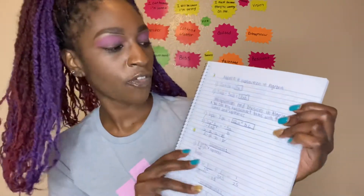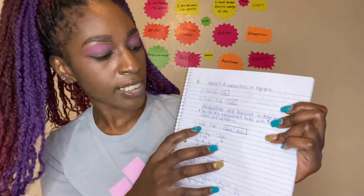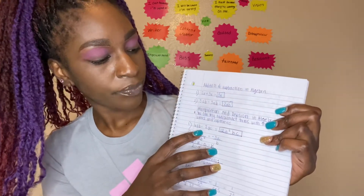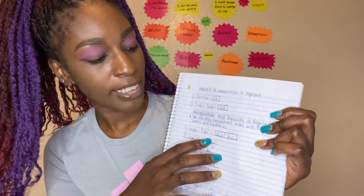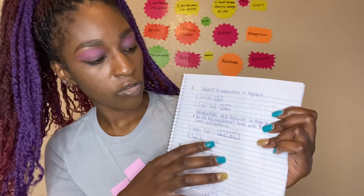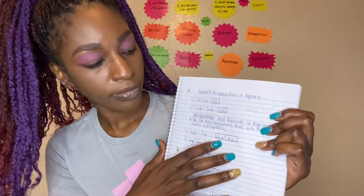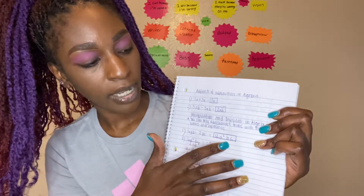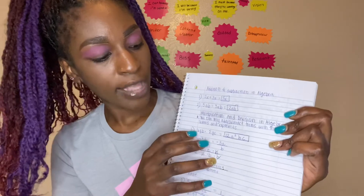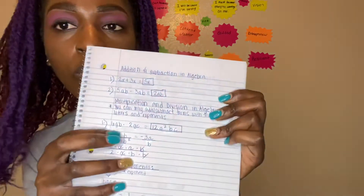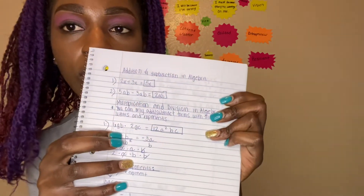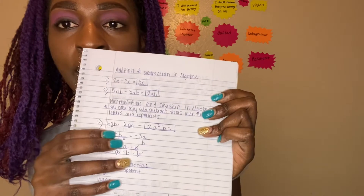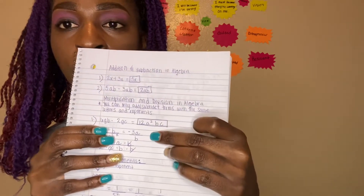You cannot put those together because they do not have the same terms. For example, 6ab times 2ac is equal to 12a squared times b times c. You had to add the like terms — those two a's — so that becomes a squared right there.